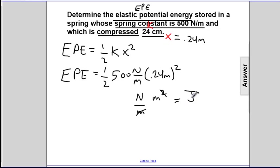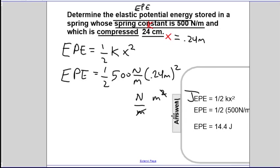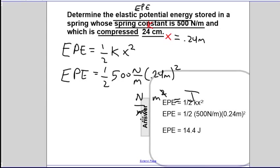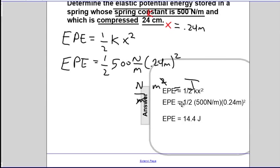If we bring the answer out and save the computation, we end up with EPE is one-half times 500 times 0.24 squared, 14.4 joules. So you do 14.4 joules of work on the spring, and it's stowed there just waiting to do something.